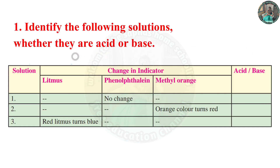The first question: identify the following solutions, whether they are acid or base, based on the change in the indicator. The indicators used are litmus, phenolphthalein, and methyl orange.